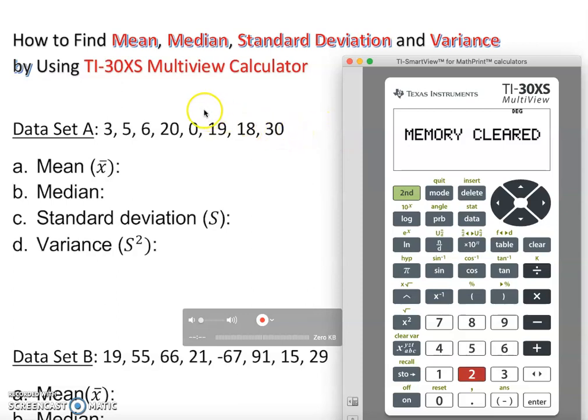Hello, how are you? Last video we learned how to find mean, median, standard deviation, and variance manually step by step. Now this video we are going to use the TI-30XS Multiview calculator. If you know how to use it and you want to check the answer, you can pause the video. Or you want to do it manually, yes, you can pause the video and check the answer later on when we go over it.